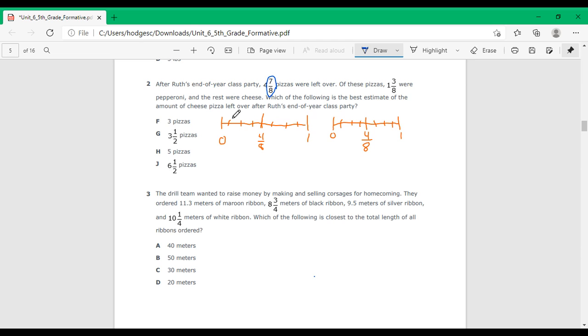Seven eighths is what I'm going to put on my number line. One, two, three, four, five, six, seven eighths, which is closer to one. So if I add this one to this four, this is five.